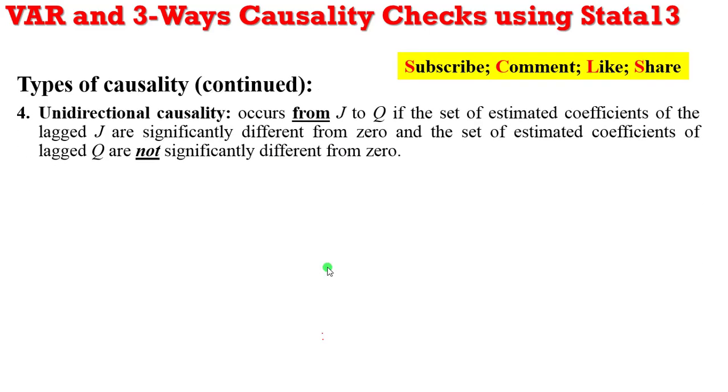What do you understand by unidirectional causality? This occurs from J to Q if the set of estimated coefficients of the lagged J are significantly different from 0, and the set of estimated coefficients of lagged Q are not significantly different from 0.